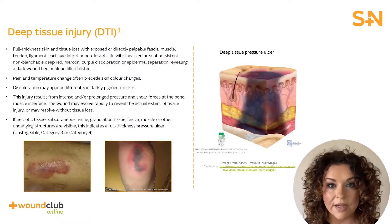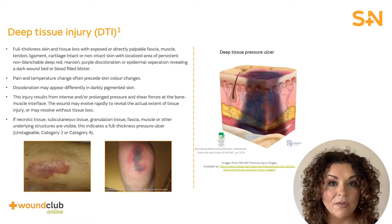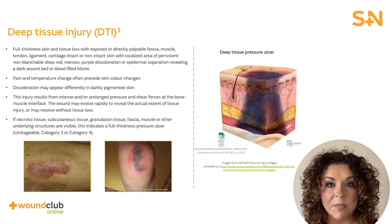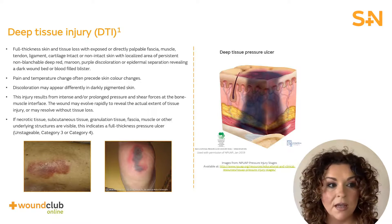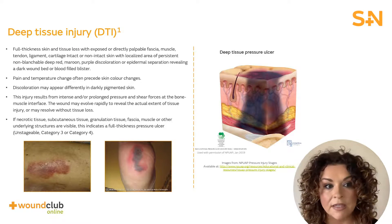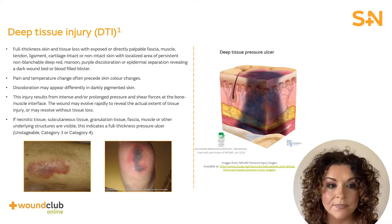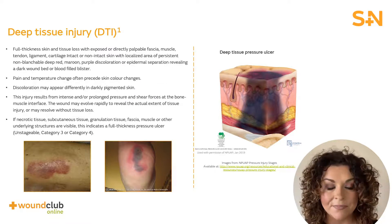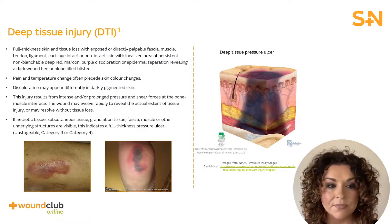Deep tissue injury or DTI is a term used to describe a unique form of pressure ulcers. These ulcers have been described by clinicians for many years with terms such as purple pressure ulcers, ulcers that are likely to deteriorate and bruises on bony prominences. By definition, they are a pressure-related injury to subcutaneous tissues under intact skin. Initially, these injuries have the appearance of a deep bruise and may lead to the development of a category 3 or 4 pressure ulcer.